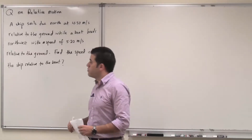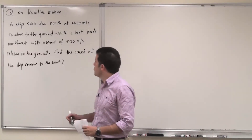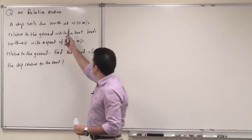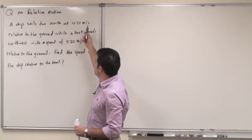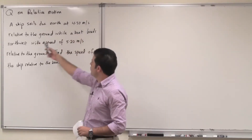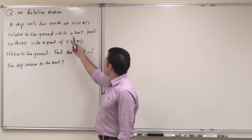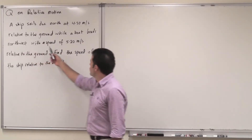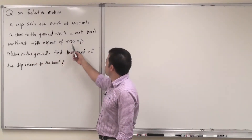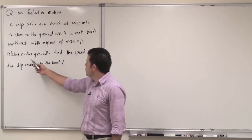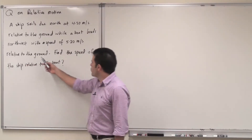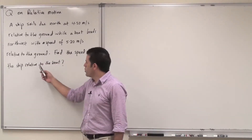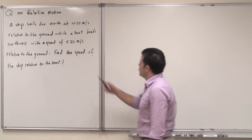This question is on relative motion. A ship sails due north at 450 meters per second relative to the ground, while a boat heads northwest with a speed of 520 meters per second relative to the ground. Find the speed of the ship relative to the boat.